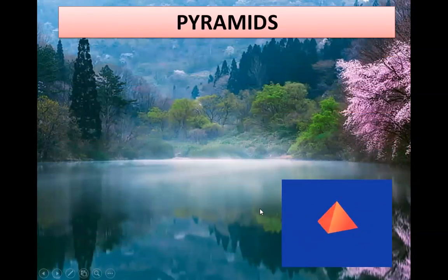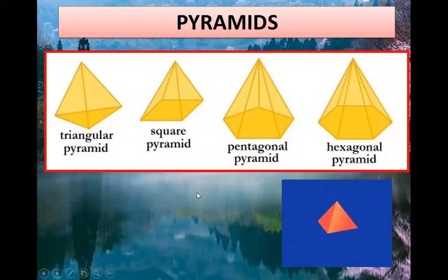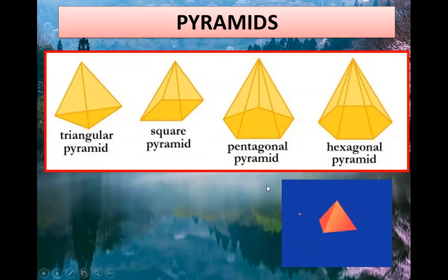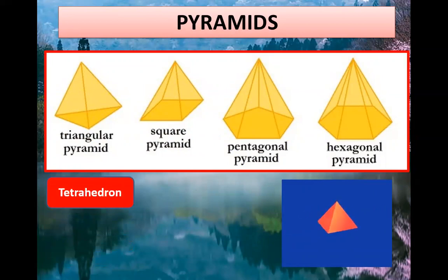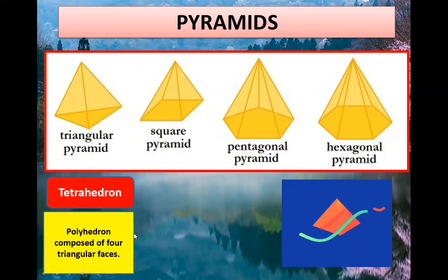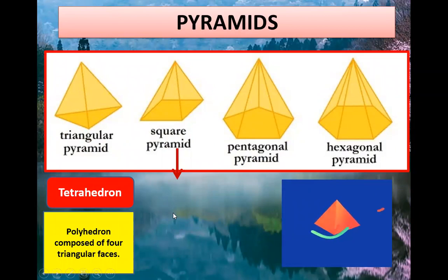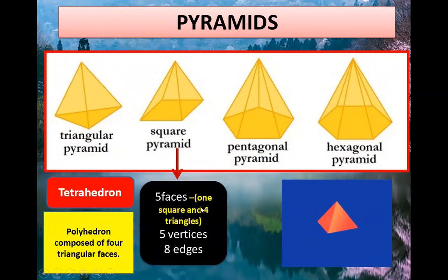These are the different types of pyramids: triangular pyramid, square pyramid, pentagonal pyramid and hexagonal pyramid. Tetrahedron — a polyhedron composed of four triangular faces. Square pyramid has five faces, that is one square and four triangles, five vertices and eight edges.